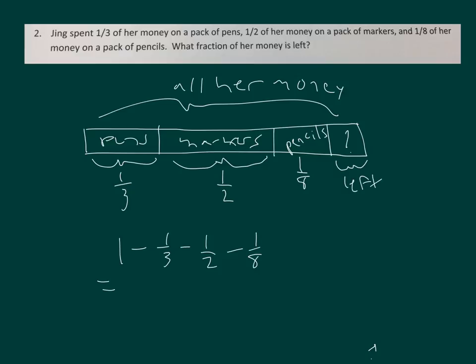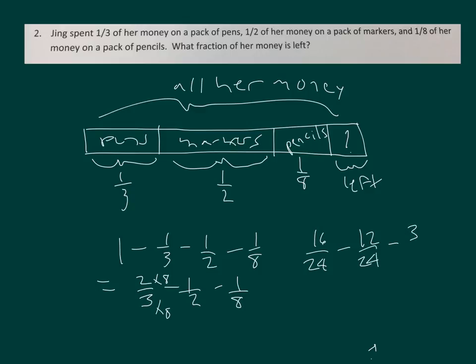One minus one-third is two-thirds, minus one-half, minus one-eighth. Let's go to twenty-fourths. That's sixteen-twenty-fourths minus twelve-twenty-fourths minus three-twenty-fourths. What's left is sixteen-twenty-fourths minus twelve-twenty-fourths, which is four-twenty-fourths, minus three-twenty-fourths. So what's left is one-twenty-fourth.